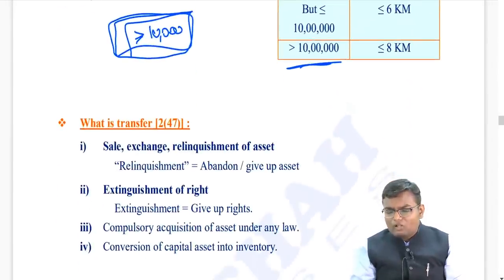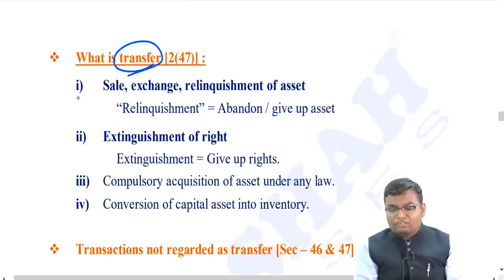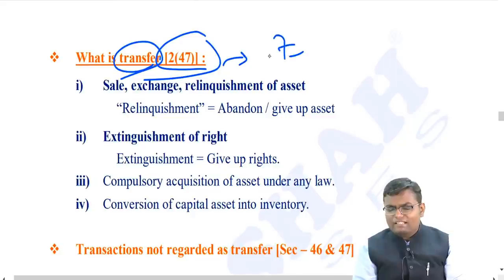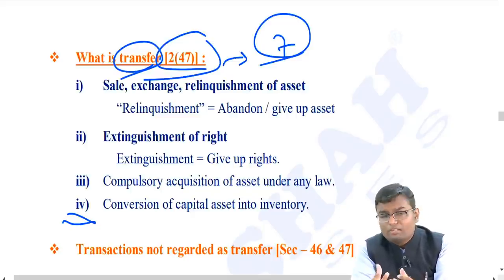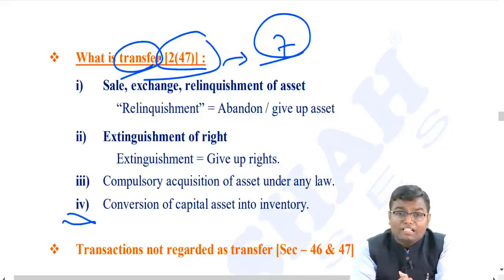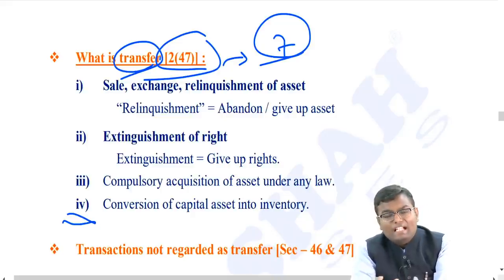Now let us understand what is called a transfer. Section 2(47) deals with this, covering seven transactions regarded as transfer, of which four are important. Number one: sale, exchange, or relinquishment of asset. A sale, barter system, or giving up an asset - like a partner giving an asset to a partnership firm - all constitute transfer, attracting capital gain.